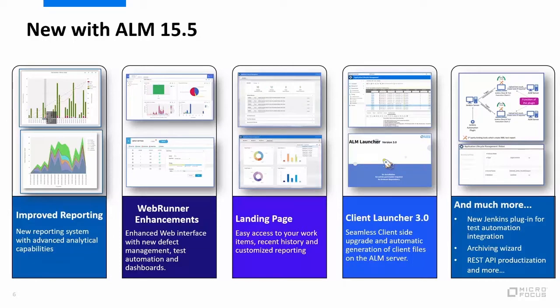With ALM 15.5, we've also introduced Client Launcher 3.0, our latest release. This release completely automates the entire process of client deployment, starting from packaging it automatically on the server side and running client-side upgrades, so once you roll out to the new version, the client-side upgrade will be taken care of automatically. And of course there is more, like a new and improved Jenkins plugin for collecting external test results, an archiving wizard, a completely productized set of REST APIs, and more.